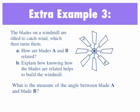The next example says the blades on a windmill are tilted to catch wind, which then turns them. How are blades A and B related? And B says, explain how knowing how the blades are related helps to build the windmill. What is the measure of the angle between blade A and blade B? A and B are related because, remember, we're talking about the transformations. A and B would be related because of a rotation.